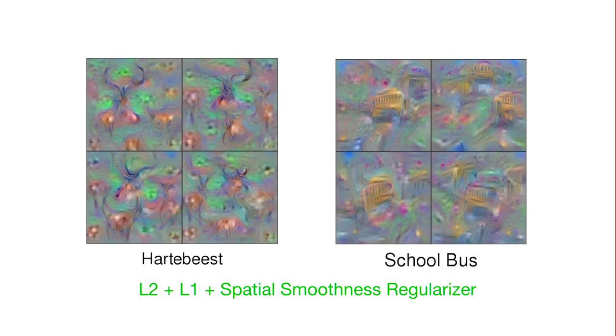It also knows that there's sort of like green in the background and that they tend to be kind of brown. On the other hand, you don't really see hartebeest hooves, right? So the network doesn't really think of like the important part of hartebeest is having hooves.